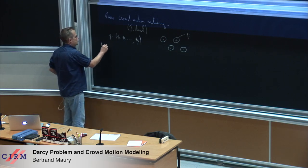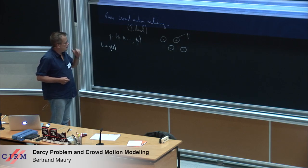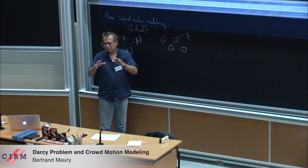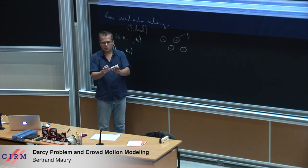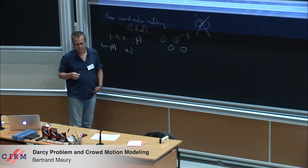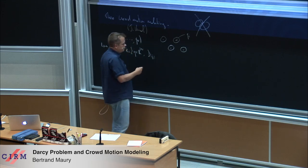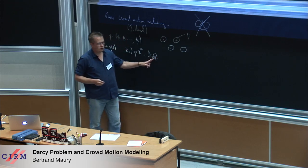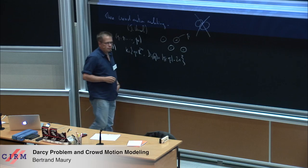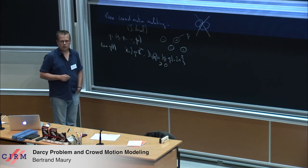You have a set of feasible configurations. You do not authorize disks to overlap — this is a rough approximation of reality. It can simply be written as the set of q in R^{2N} such that d_{ij}, where d_{ij} equals the distance |q_j minus q_i| minus 2r (r being the common radius), remains non-negative. You do not want to exit this set. Associated to this set is a natural definition of a set of feasible velocities.